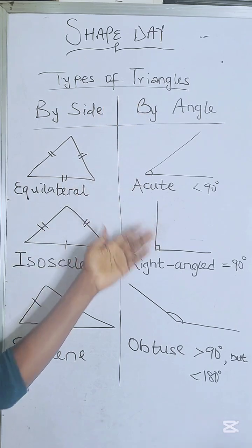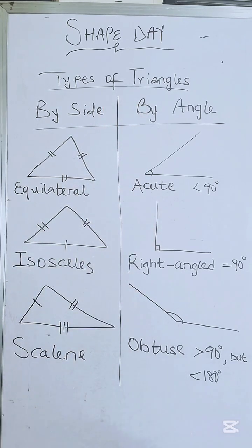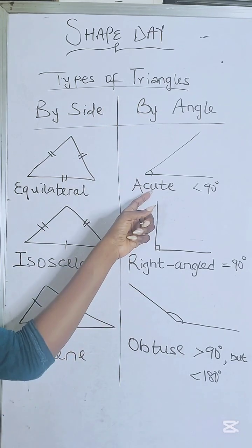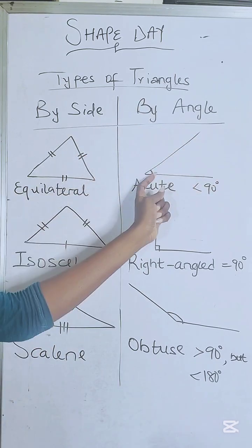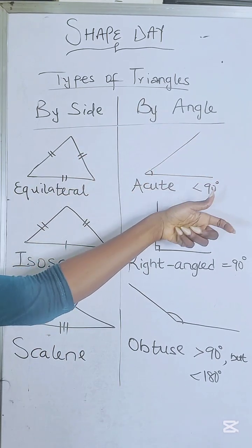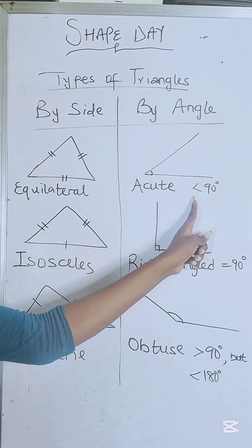Now we're moving to the ones based on the angles. How do we differentiate the triangles based on the angles? Acute triangle, put it as a code in your head that it bends. It's acting like it's bowing down to something. So it's less than 90 degrees.